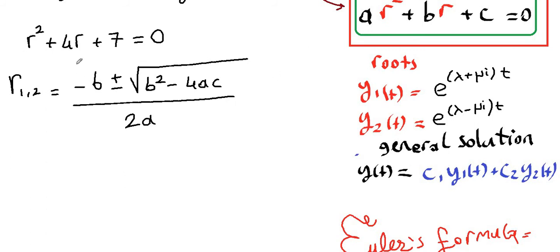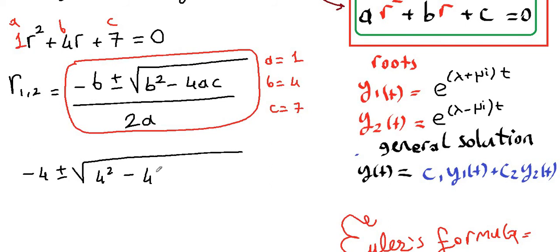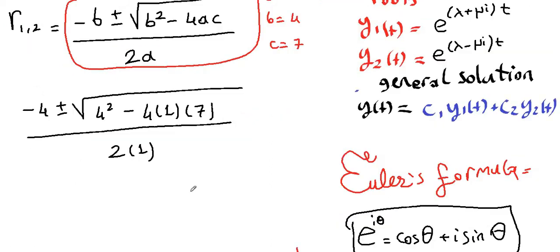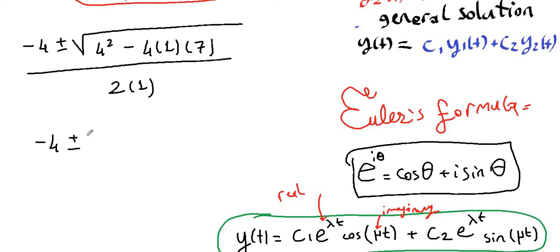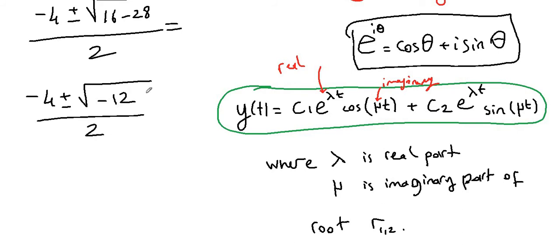In our case, a equals 1, b equals 4, and c equals 7. Plugging in: negative 4 plus or minus the square root of 4 squared minus 4 times 1 times 7, all over 2 times 1. This gives us negative 4 plus or minus the square root of 16 minus 28, all over 2, which is negative 4 plus or minus the square root of negative 12 over 2. The square root of negative 12 simplifies to 2√3·i.